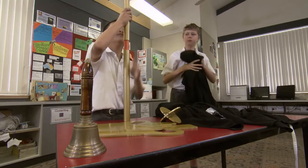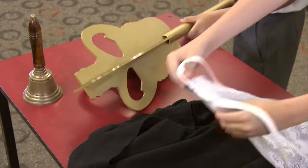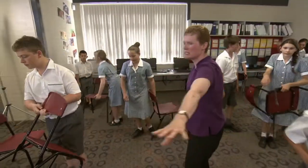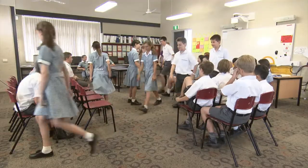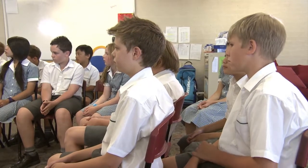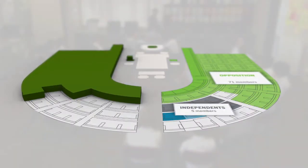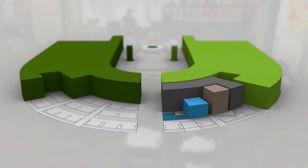Preparing some costumes and props will help your students get into role. Transform your classroom into the House of Representatives. Move the chairs into a horseshoe shape with a table at one end. You can now sort the class into government and opposition teams and independents and minor parties. Make sure that the ratio of members in your chamber compares to the real House of Representatives. Refer to the Parliament now on the PEO website for the current numbers in the House.